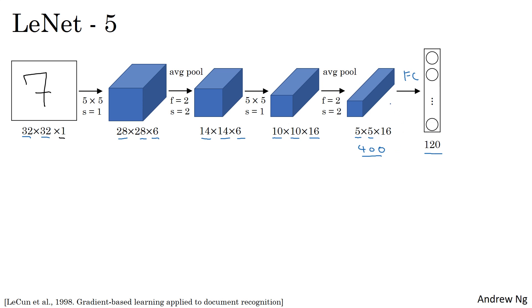Sometimes you would draw out explicitly a layer with 400 nodes. I'm skipping that here. There's a fully connected layer, and then another fully connected layer. Then the final step uses these 84 features with one final output to make a prediction for y-hat. Y-hat took on 10 possible values corresponding to recognizing each of the digits from 0 to 9.